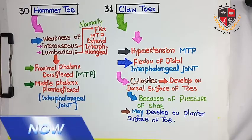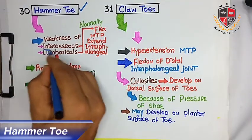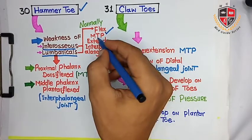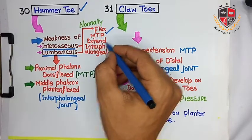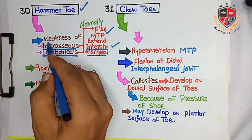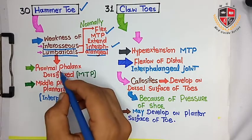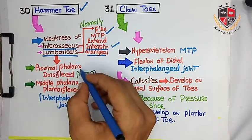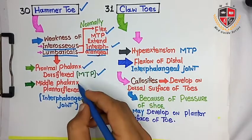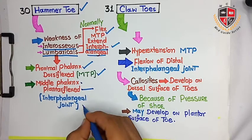The next clinical is hammer toe. Normally the interosseous muscle and lumbrical muscle causes flexion at the metatarsophalangeal joint and extension at the interphalangeal joint. Weakness of interosseous muscle and lumbrical muscle causes the proximal phalanx to dorsiflex at the metatarsophalangeal joint and the middle phalanx to plantarflex at the interphalangeal joint.